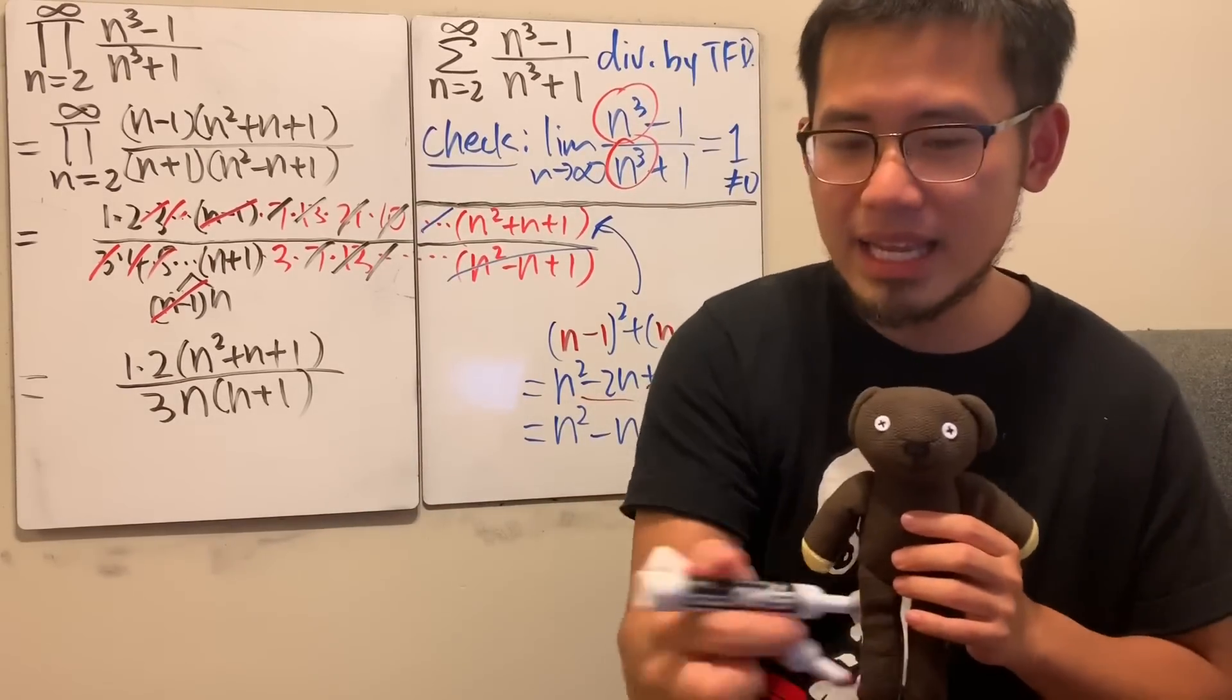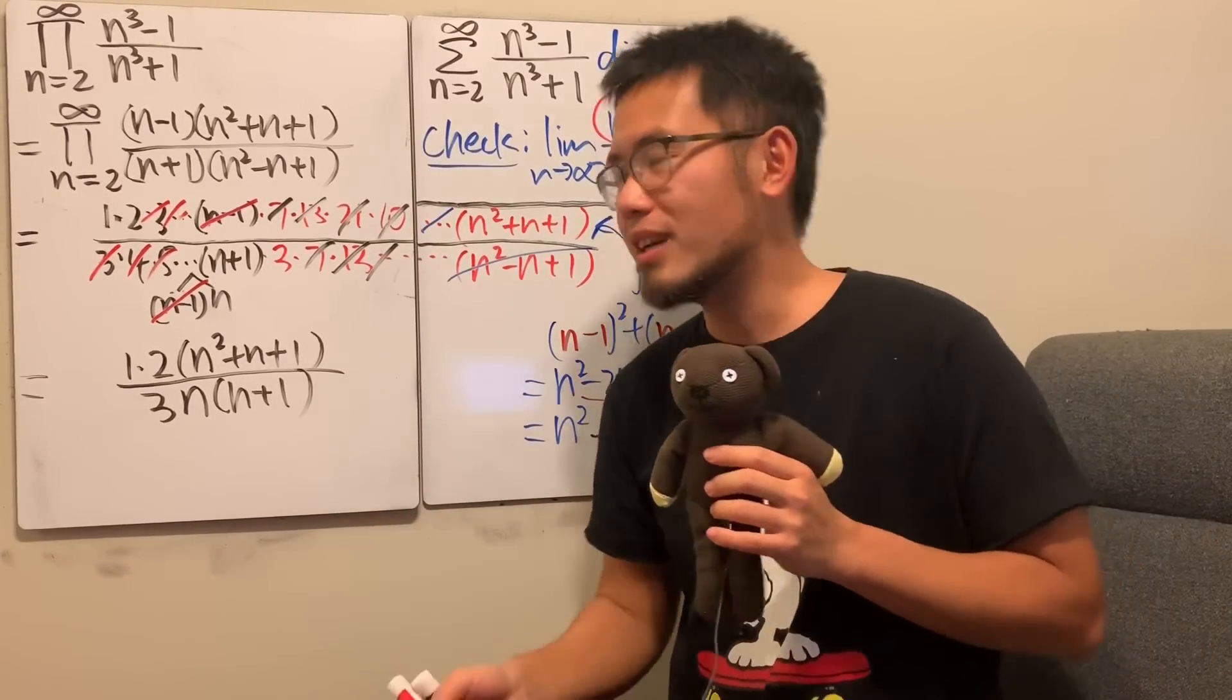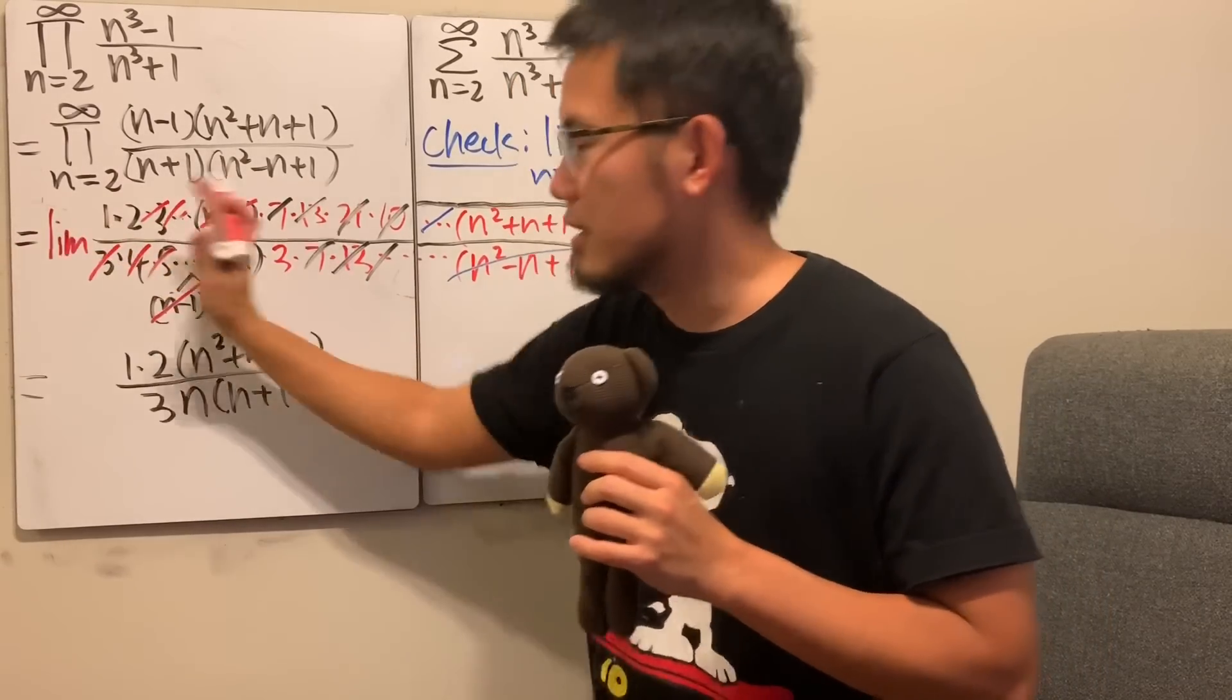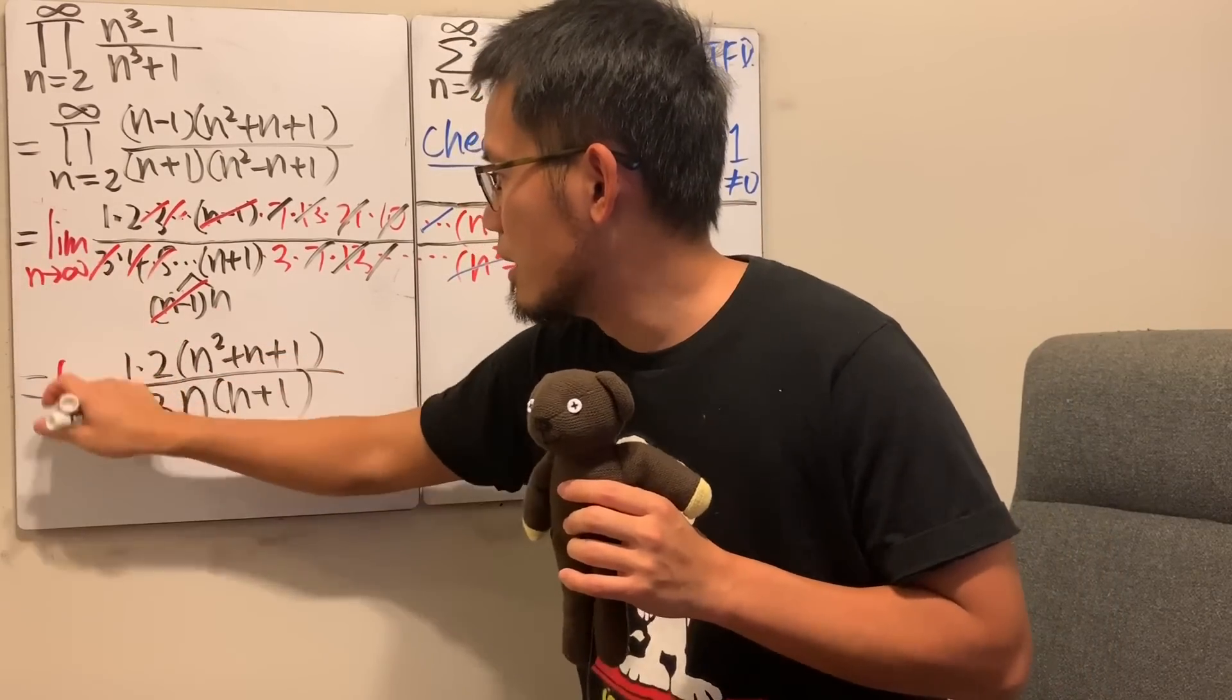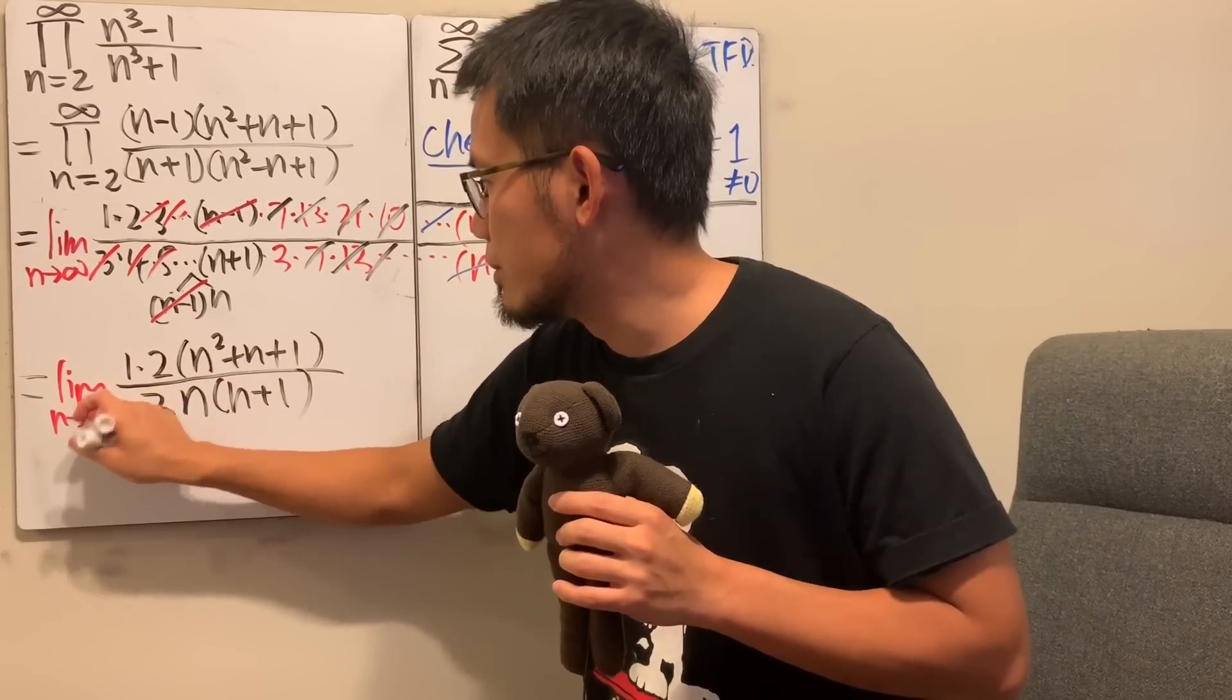Well, well, don't forget that, in the end, we still have to do our usual business. Namely, we still have to take the limit, because this is just the n's partial product. So, n goes to infinity, take the limit as n goes to infinity.